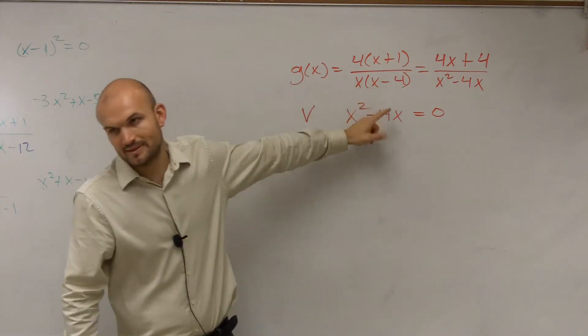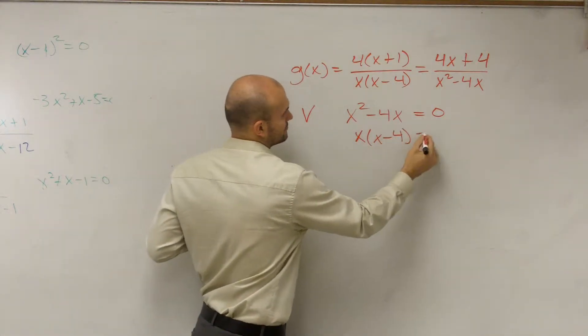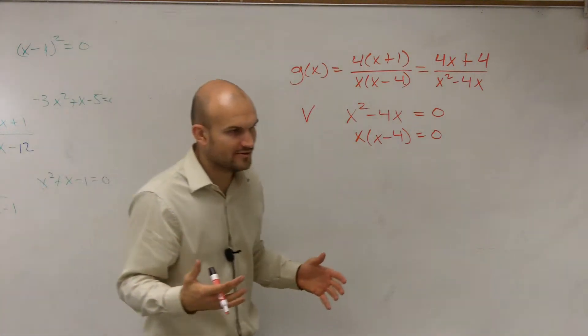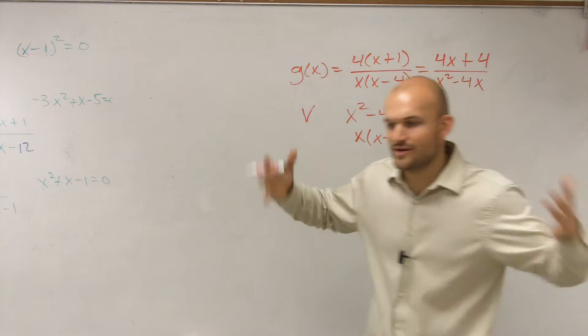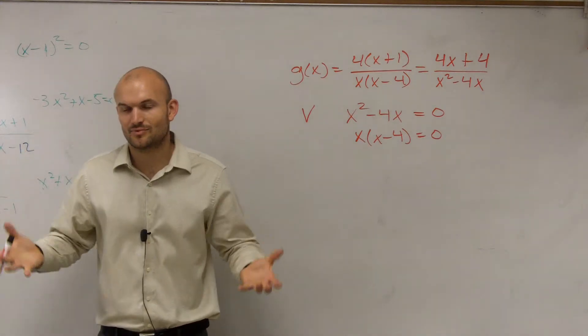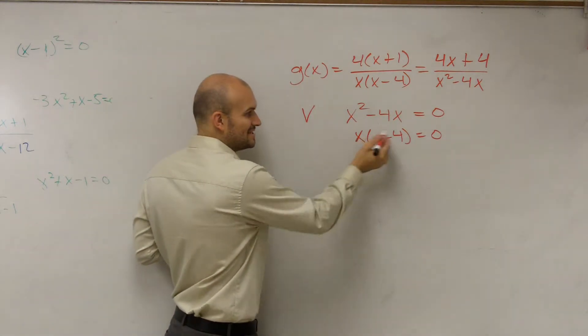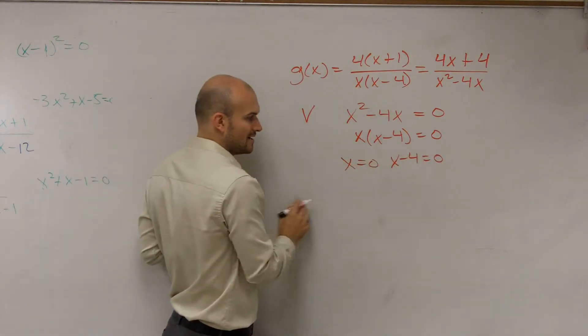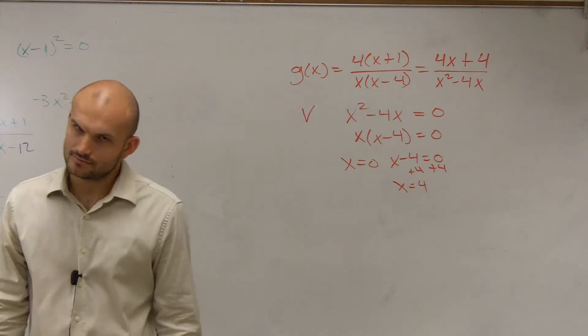Now for actually this one, it probably would have been easiest to keep it in that non-factored form, because I'm going to factor out an x anyways. Now what do we do from here? Why do we factor it? We factor to write a polynomial as a product of its factors, so we can use one very important property - the zero product property. What that means is if these two numbers multiply to give you 0, then x equals 0, or x minus 4 equals 0. Now can we solve for x? Yes.